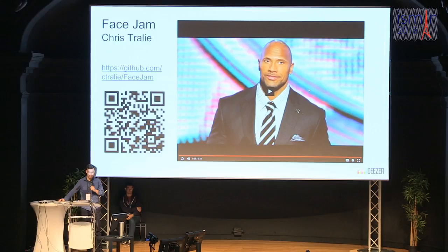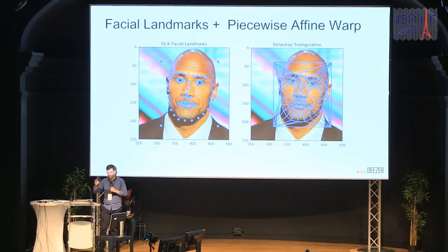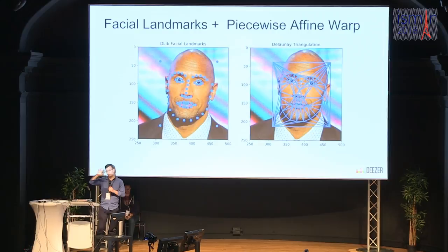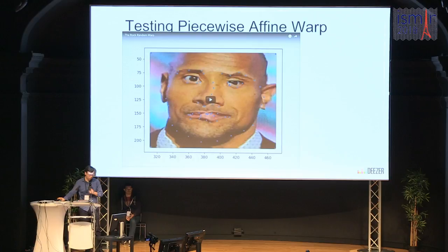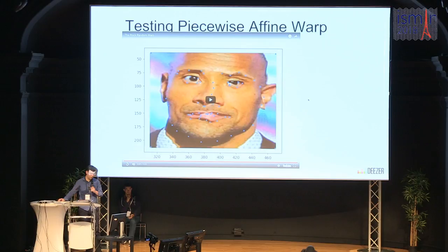The first step was to get the expression stuff under control. I used a library called dlib to extract facial landmarks — key points on the face around the eyebrows, nose, mouth, etc. Then I did a Delaunay triangulation on this so that if I can figure out where the landmarks go, I can extend that map to the rest of the face and compute a warp over all the pixels. It was working when I could randomly perturb the facial landmarks and get the face to change.